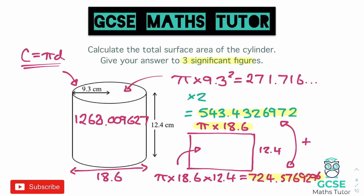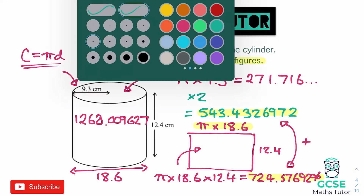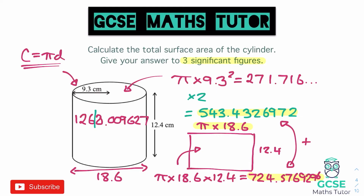Rounding to three significant figures: 1, 2, 6 — the number after the line tells us to round up to the nearest 10, so that gives us 1,270. And since this is area, the units are centimetres squared. So there's our final answer: 1,270 centimetres squared. To summarise: work out the two circles, and the curved part using the circumference as the length of the rectangle.